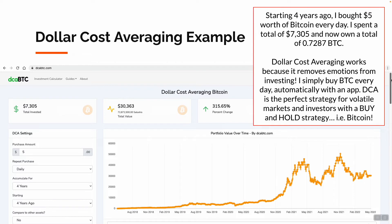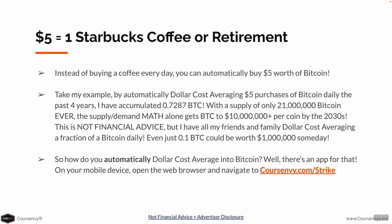Dollar Cost Averaging is the perfect strategy for volatile markets and investors with a buy-and-hold strategy — i.e., Bitcoin. Instead of buying a coffee every day for $5, you can automatically buy $5 worth of Bitcoin. By automatically Dollar Cost Averaging $5 purchases of Bitcoin daily over the past four years, I have accumulated nearly an entire Bitcoin. This is not financial advice, but I have everyone I know dollar-cost averaging a fraction of a Bitcoin daily.